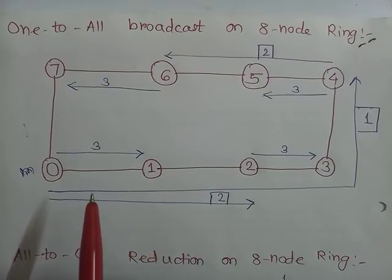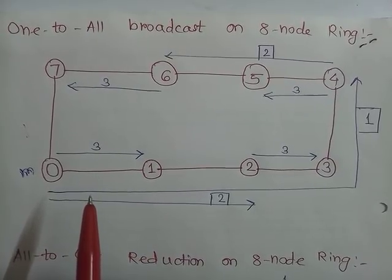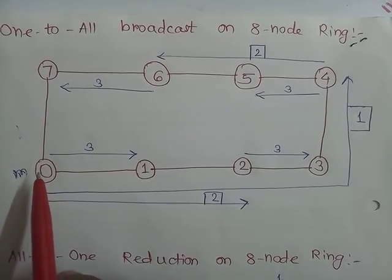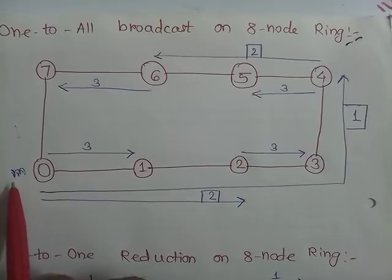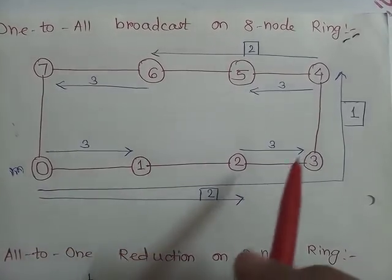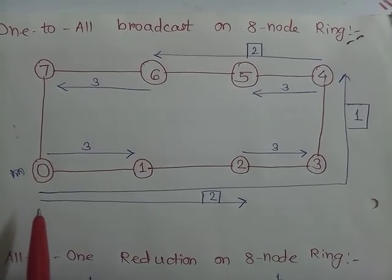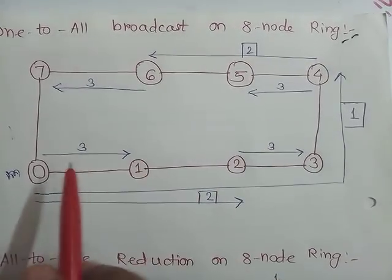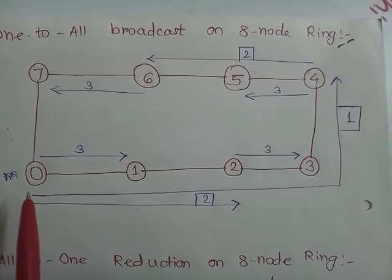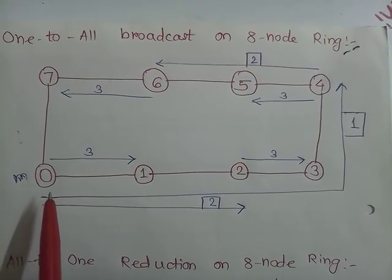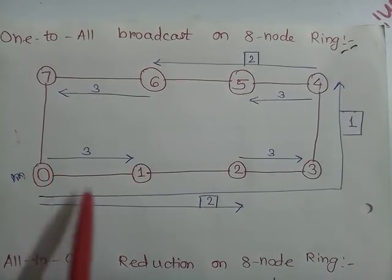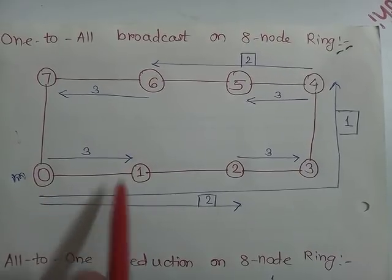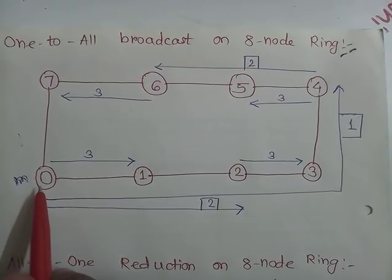In parallel computing, there is a need to transfer a message from one node to another node. For example, node 0 has message M that needs to be transferred to every other node in this ring. There are many ways that node 0 can transfer message to other nodes, so we have to optimize this transfer. An algorithm has been developed for 8-node ring to transfer a message at node 0 to all other nodes. That's why it is called one-to-all broadcast.